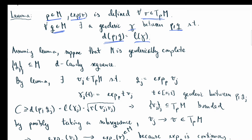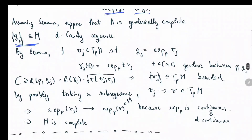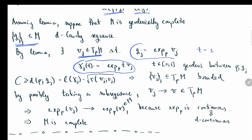Assuming this lemma — which I'll prove at the very end — let's show that geodesically complete manifolds are metrically complete. Take a Cauchy sequence q_j, and let's show it converges. By the lemma, all these points q_j can be joined to point p by a geodesic. This geodesic can always be written in the form exp_p(t·v_j) for some tangent vector v_j, and at time t = 1 this geodesic passes through q_j.